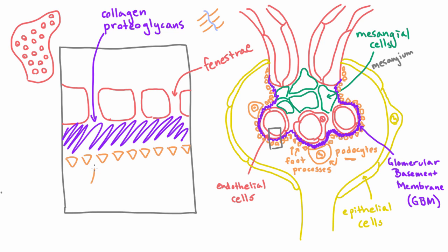The last layer is the foot processes from the podocytes. Between these foot processes we have little spaces that are sometimes called slit pores, or filtration slits. What's amazing is that to make these little slits even smaller, the kidney has little proteins that span across between these foot processes — it's quite remarkable to what extent the kidney makes these spaces small.